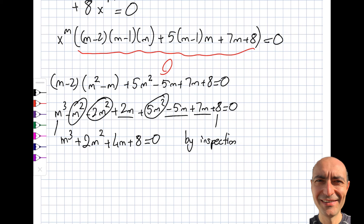I'm not going to try +2 because it will simply sum up and not give zero. Let's try −2: (−2)³ = −8, plus 2(4) = +8, plus 4(−2) = −8, plus 8 = 0. Yes! So by inspection, m = −2 is a root.